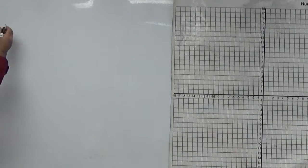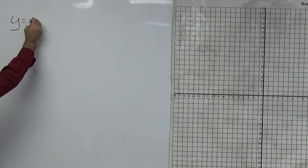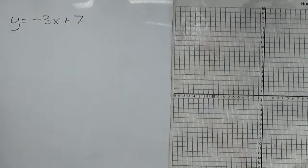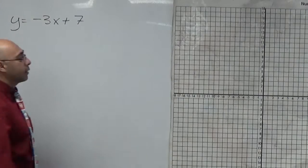Solving lines, really quick. If you had a line like this, y equals negative 3x plus 7. In order to graph this guy, pretty simple, you start at 7.